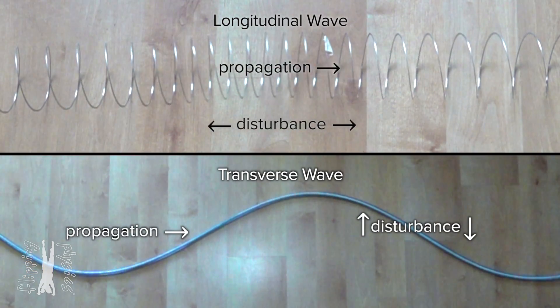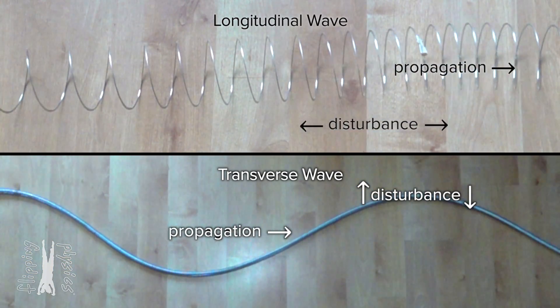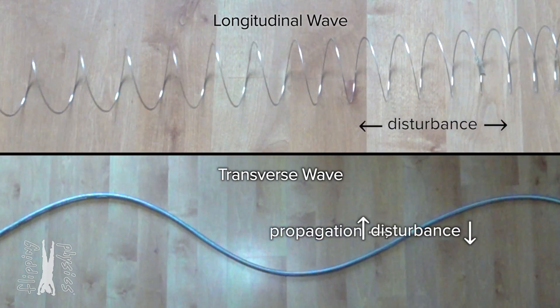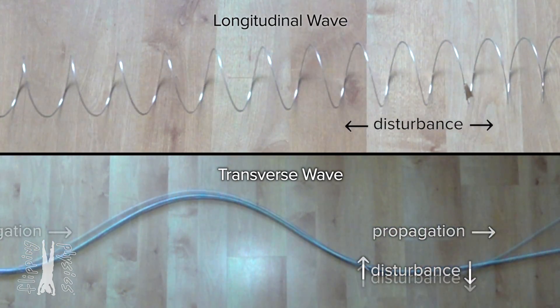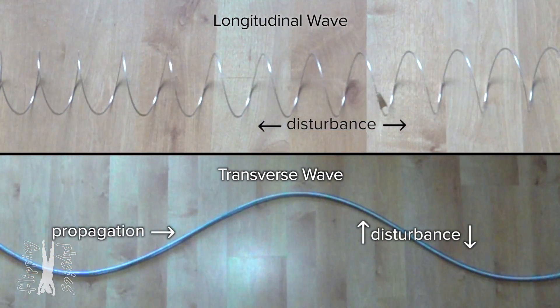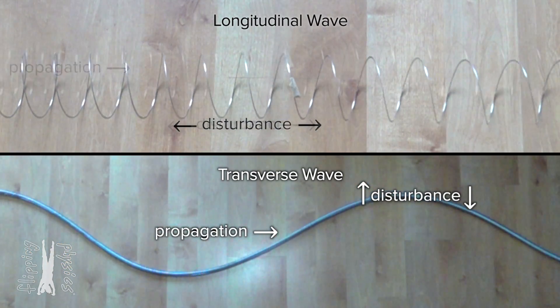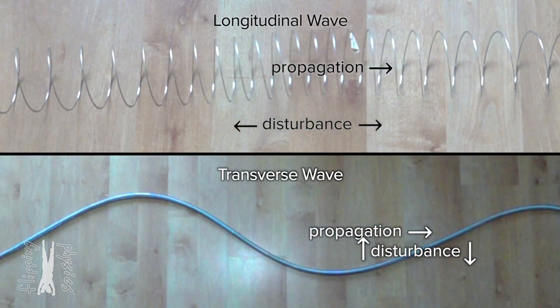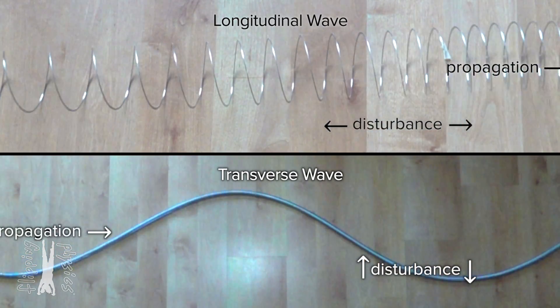Whether a wave is transverse or longitudinal has to do with the direction of wave propagation relative to the direction of the disturbance of the medium. In a transverse wave, the direction of wave propagation is perpendicular to the direction of the disturbance of the medium. In a longitudinal wave, the two are parallel to one another.